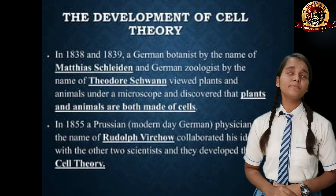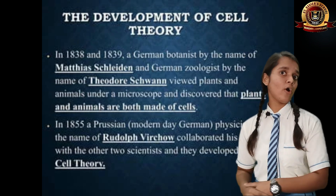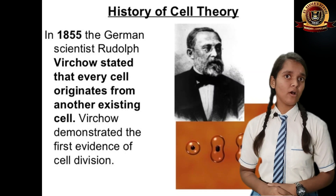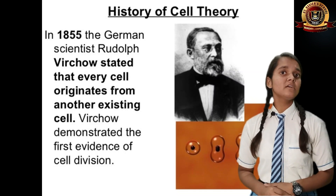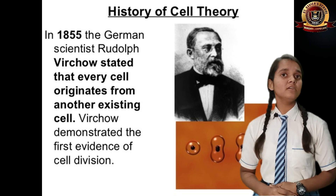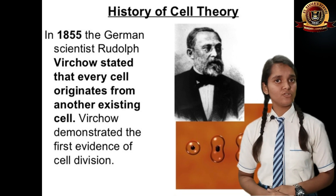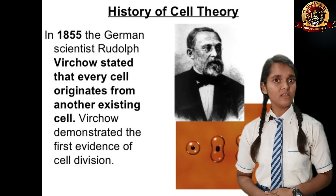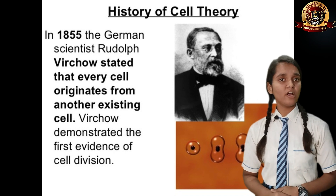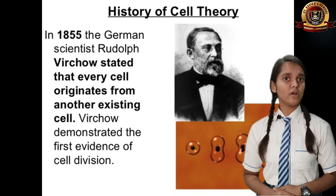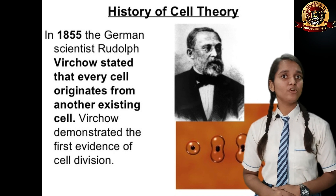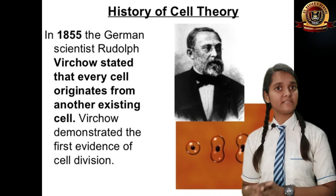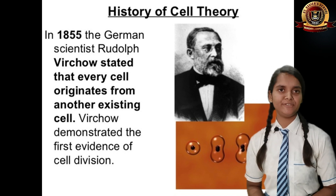But they didn't propose how new cells are formed. In 1855, Rudolf Virchow came and said that new cells are formed from pre-existing cells. So now we know Cell Theory as: all living organisms are composed of cells and products of cells, and all cells arise from pre-existing cells. Thank you.